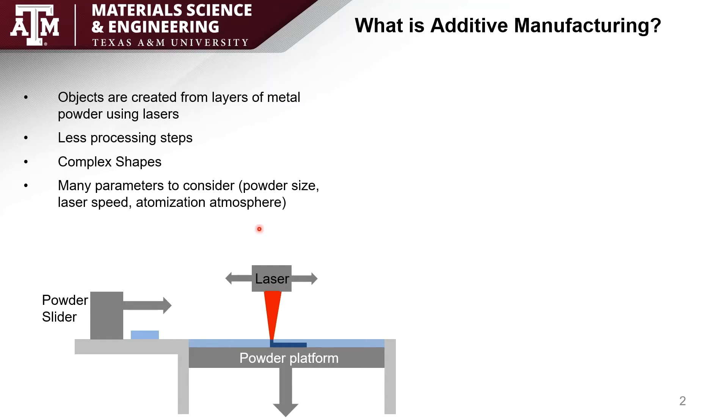To help visualize additive manufacturing a little bit better, I created this picture here. This powder platform holds up unmelted metal powder which is in the light blue as well as the already melted product which is in the dark blue. There's a laser overhead that can pass, and after it melts the powder on one layer, the powder platform will lower itself by a small increment and the powder slider will push, adding a new layer of powder on top. After this the laser will pass through again to continue adding layers until the product's done.